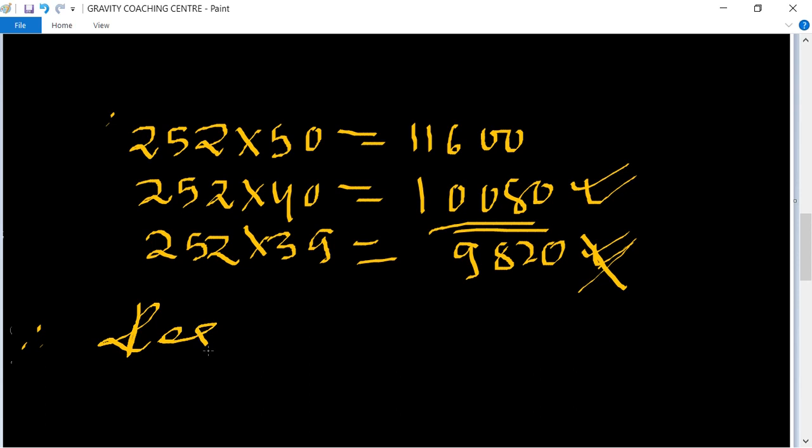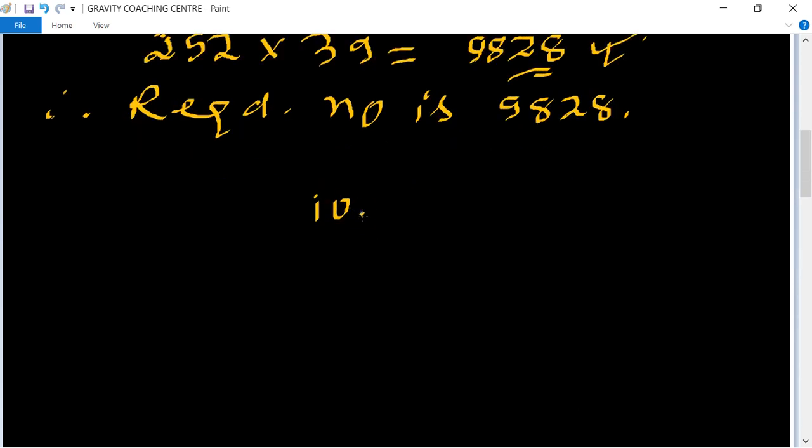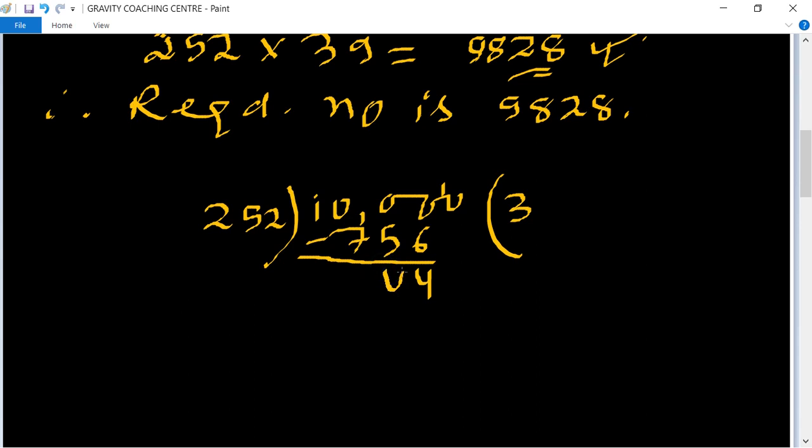To find the required number, we divide 10,000 by 252. Taking the first four digits gives 1,008, and we perform the division: 756 minus 442.